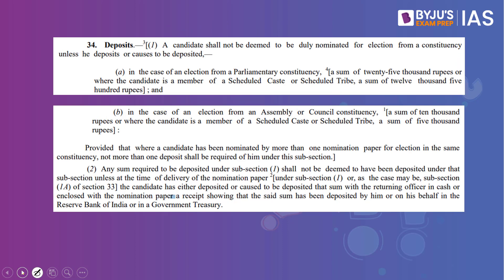Section 34 of the Representation of the People's Act states that a candidate shall not be deemed duly nominated unless they deposit a sum of Rs. 25,000 for a parliamentary constituency, or Rs. 12,500 if the candidate belongs to a Scheduled Caste or Scheduled Tribe. For assembly elections, the deposit is Rs. 10,000, or Rs. 5,000 for SC/ST candidates. For presidential and vice-presidential elections, the deposit is Rs. 15,000.